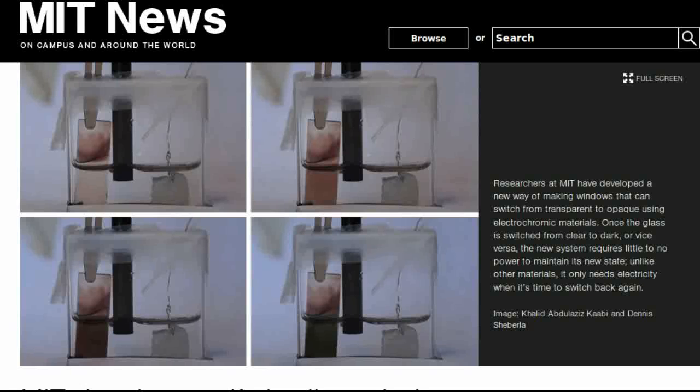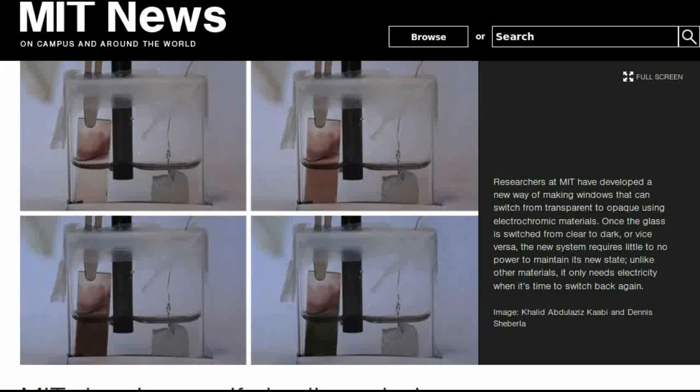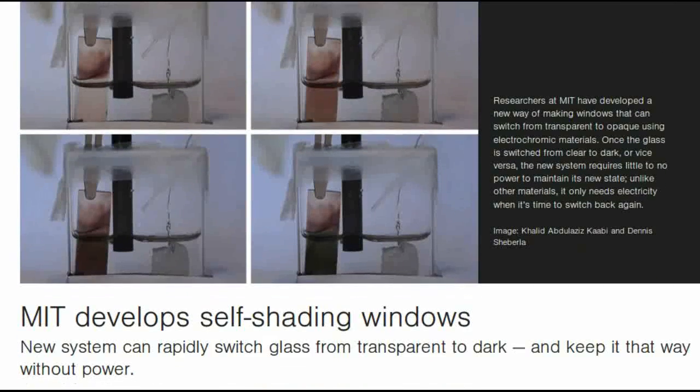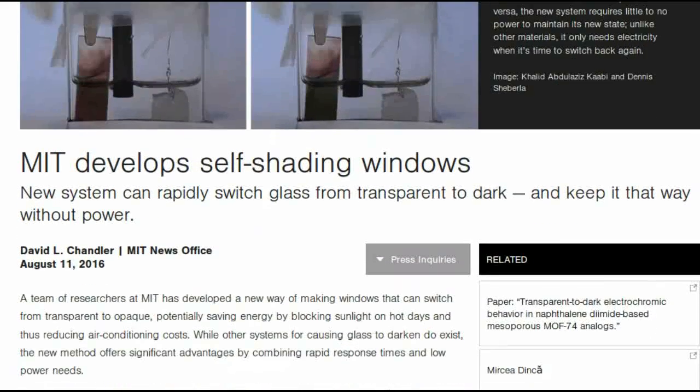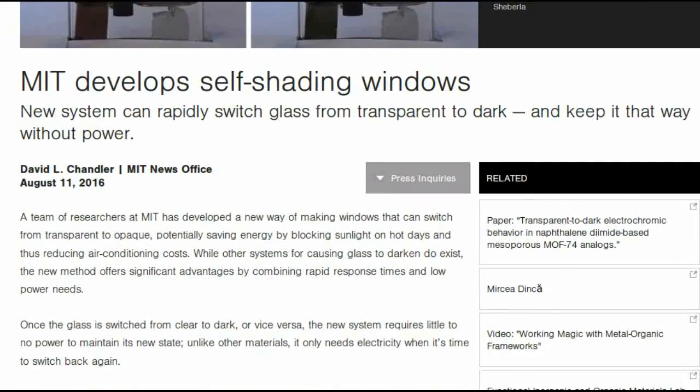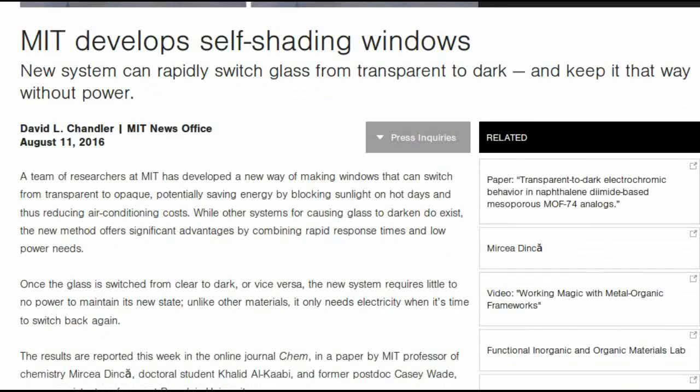A team of researchers at MIT has developed a new way of making windows that can switch from transparent to opaque, potentially saving energy by blocking sunlight on hot days and thus reducing air conditioning costs.